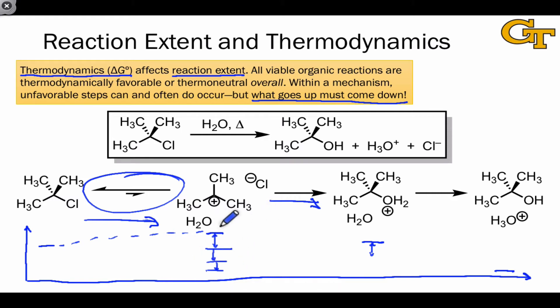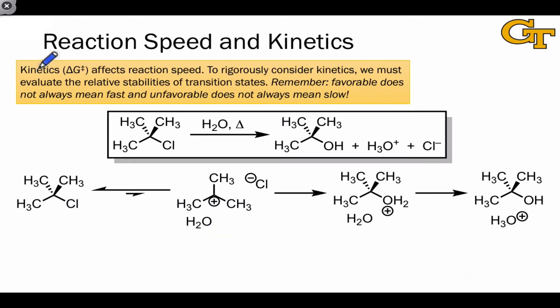Kinetics, which is wrapped up in the activation energy delta G‡, affects reaction speed. Since delta G‡ refers to an energy difference between a stable species and a transition state, we need to consider the stabilities of transition states when evaluating kinetics. More stable transition states will be favored. For example, the transition state of the first step of this mechanism, which is rate determining, is going to be somewhere here higher in energy than the intermediates that are formed.